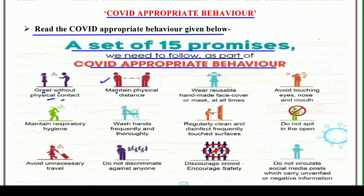Second is: maintain physical distance. Dono juno ke beech mein physical distance banana bahut zaroori hai. Yani do gaz, yani 6 feet ki shaaririk doori ka palan karna bahut zaroori hai. Jab aap school mein bhi jaate hain — 9th, 12th wale bacche jo ja rahe hain, woh bhi aapke bhai behen hain — toh aap unhe bhi bataaiye ki school mein bhi agar aap jaate hain, toh doori bana ke rakhiye. Aap khud bhi agar apne dost ke saath jaate hain, dost ke ghar jaate hain, ya kahin bahar ghumne jaate hain, tab bhi aap ek samaajik, shaaririk doori bana ke rakhiye, jisse ki aap COVID se bache rehenge.